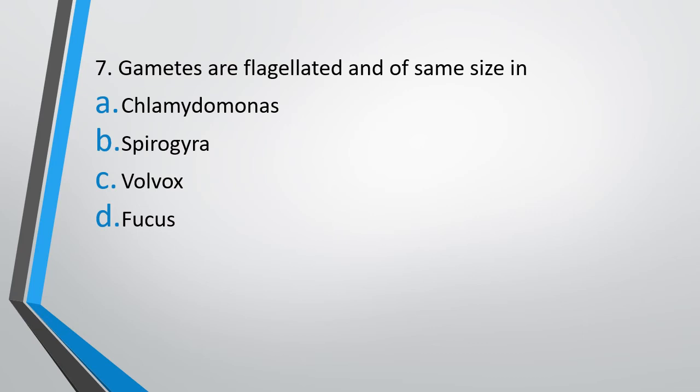Question 7: Gametes are flagellated and of the same size in — Option A: Chlamydomonas. Option B: Spirogyra. Option C: Volvox. Option D: Fucus. The correct answer is Option A, Chlamydomonas.